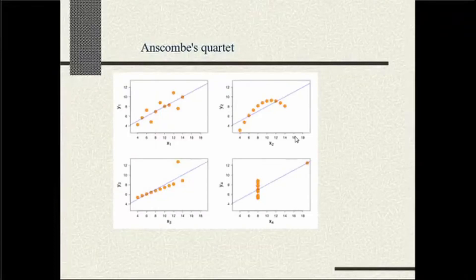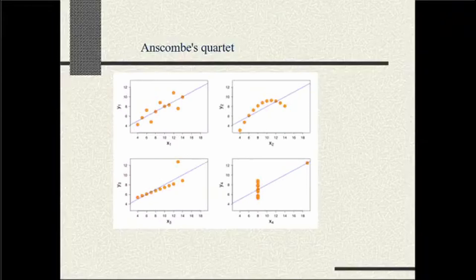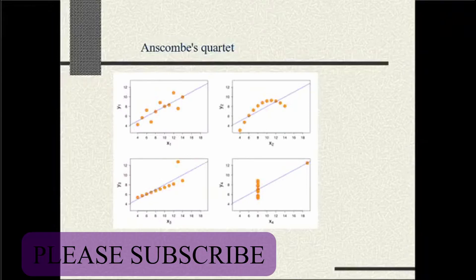In this video, we will learn about Anscombe's Quartet. It is related to correlation and some of the shortcomings of correlation analysis. This analysis was done by one of the famous statisticians, and the name Anscombe actually comes from his name. It is basically about a very important shortcoming of correlation analysis, which is that just by looking at the correlation statistics, you cannot really find out the relationship between two variables.